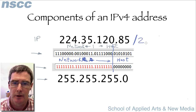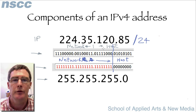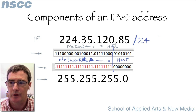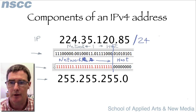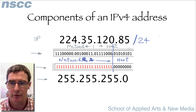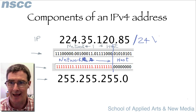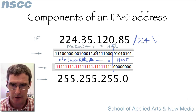If you see an IP address written as an address slash 24, that means the first 24 bits starting from the left-hand side are all ones and the rest are zeros. This is a shorthand notation that gives us both the network mask and the IP address.